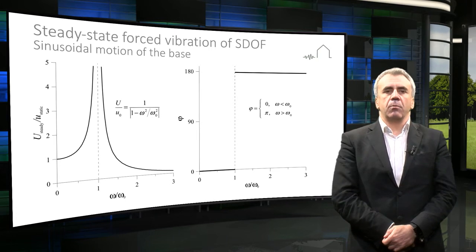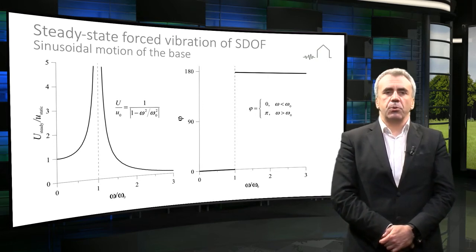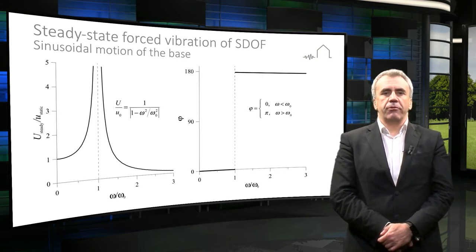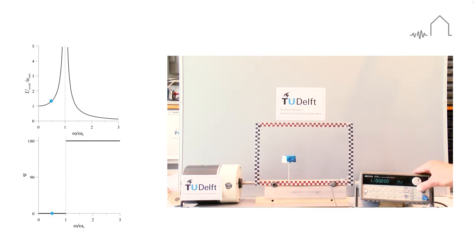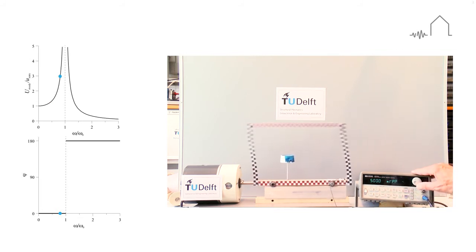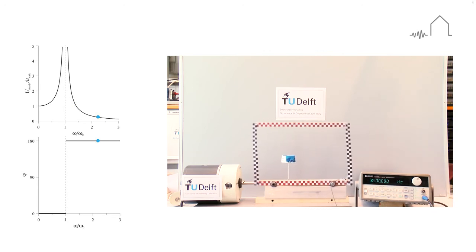Let us take a closer look at the dynamic amplification graph at the left. This graph is of paramount importance for understanding the dynamic response of the structure. You can see that the dynamic amplification factor can be very large when the frequency of the base vibration gets close to the natural frequency of the structure. Looking at a lab scale experiment movie, it can be clearly seen that by increasing the frequency of the base motion, the response first grows and then, having gone to really large responses, decays.